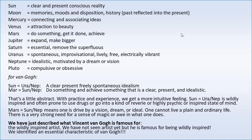To do the interpretation, you can just stick the words together. For Sun equals Uranus-Neptune — the equals sign means conjunct or opposition in vibrational astrology — we can just say: a clear and present conscious reality that is freely spontaneous and idealistic. You can just stick it together and get to the heart of what this means.